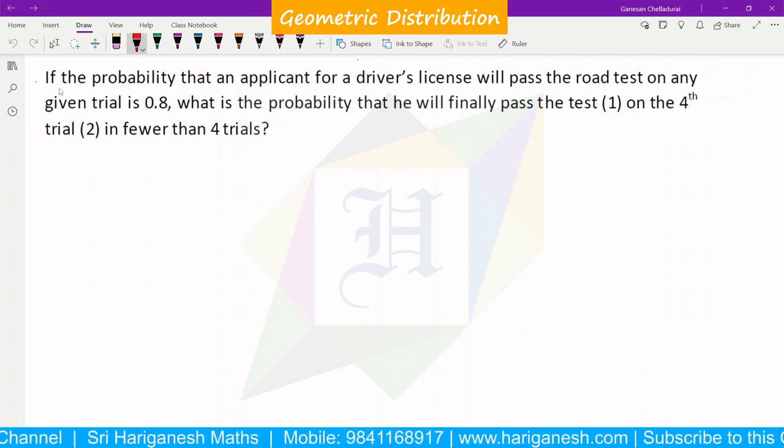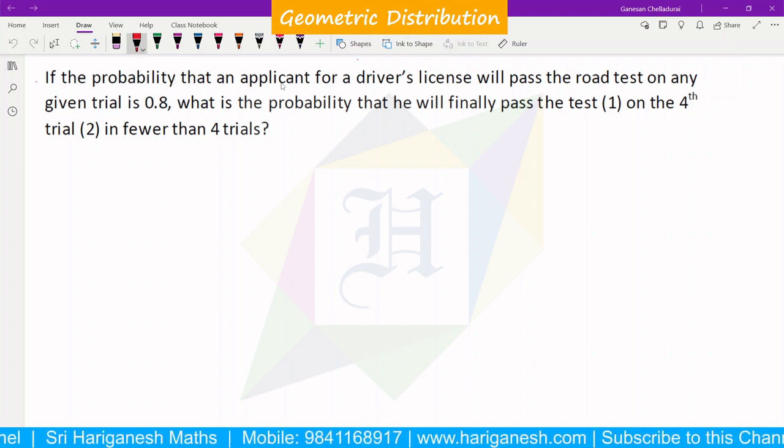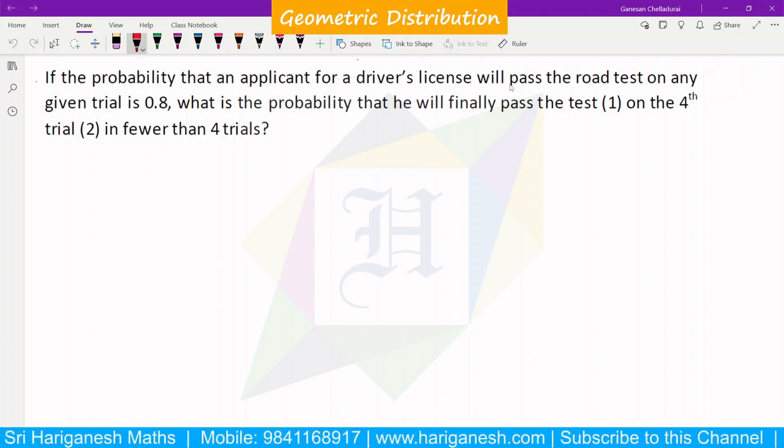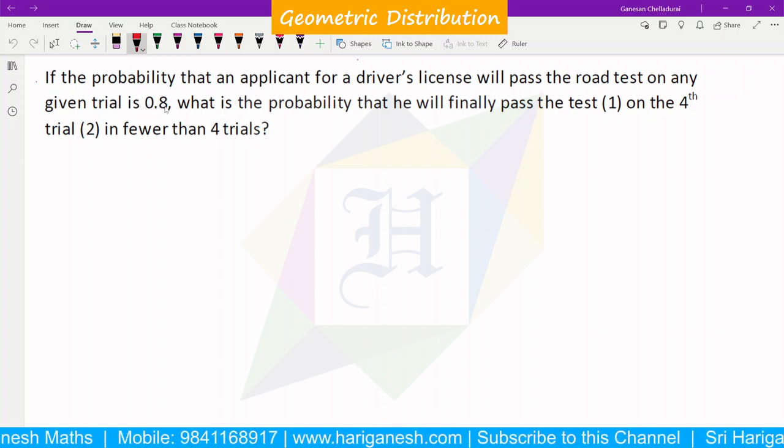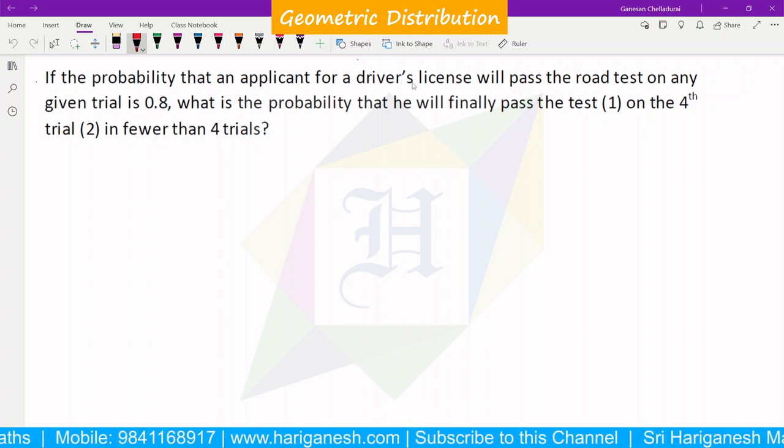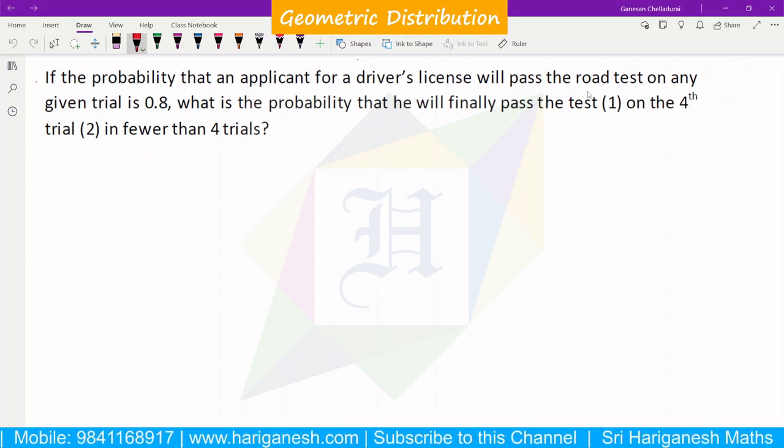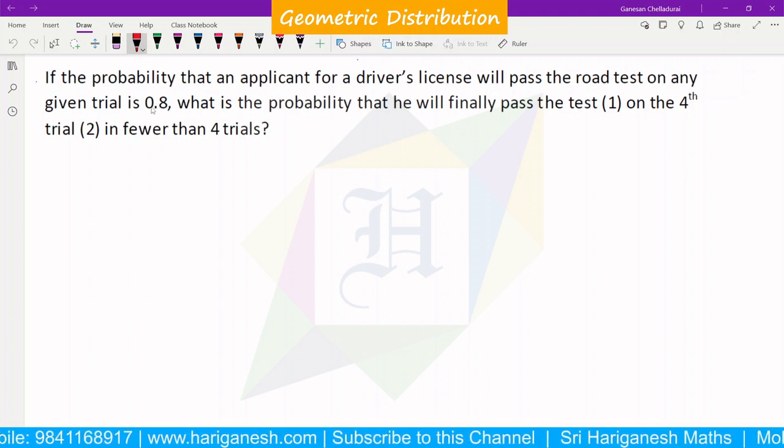The probability that an applicant for a driver's license will pass the road test on any given trial is 0.8. What is the probability that he will pass the road test? The probability is 0.8.